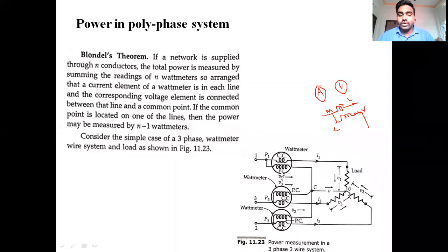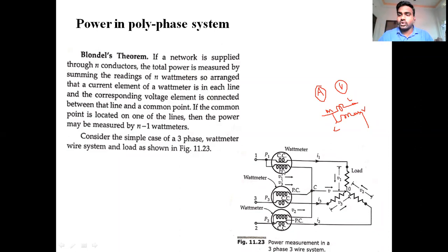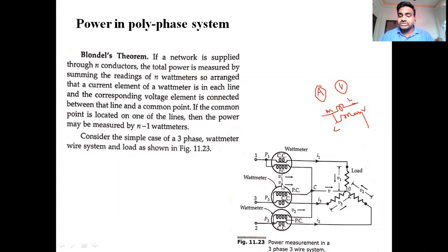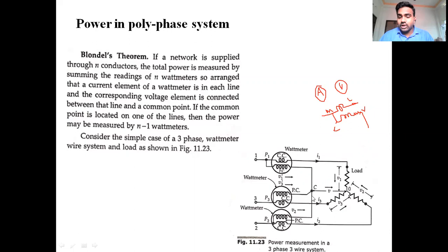Current flows through the current coil element; voltage flows through the potential coil — called the voltage element. The current coils are connected to individual lines, and all potential coils are connected to a common point. If this common point is located away from the lines — not connected on line 1, 2, or 3 — it is separated away from the lines.